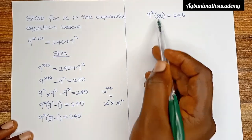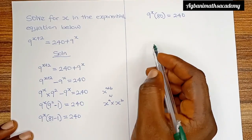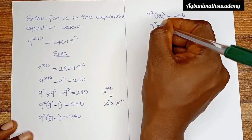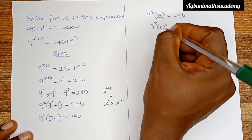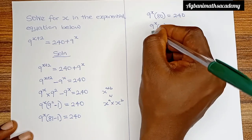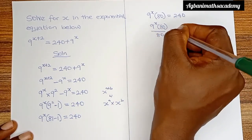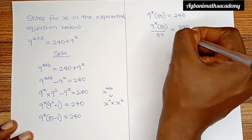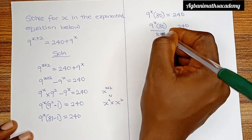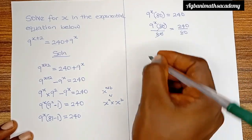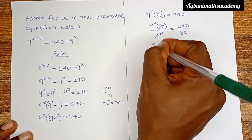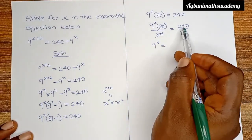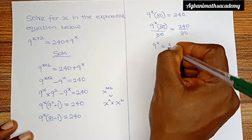In order to cancel out 80, we divide both sides by 80. So 9 raised to the power x multiplied by 80, all over 80, is equal to 240 all over 80. 80 cancels out 80, giving us 9 raised to the power x is equal to 240 divided by 80, which is 3.